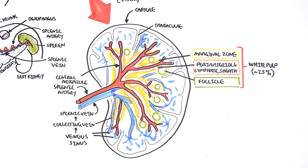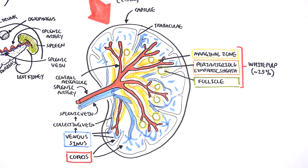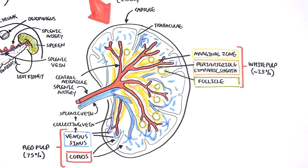Between the end arteries and the venous sinus is an area of tissue called the cords, also known as the cords of Billroth, where there are a lot of macrophages — your phagocytic eating cells. The cords and the venous sinus make up what is known as the red pulp. The red pulp makes up the majority of the spleen at 75%, and is important in destroying or filtering abnormal and old red blood cells.